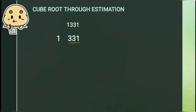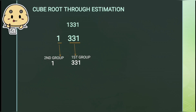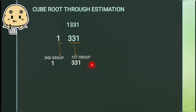On grouping we have got two groups. In the first group we have 331 and in the second group we have 1. From the first group we will get the ones digit of the cube root of the given number, and from the second group we will get the tens digit of the cube root of the given number.